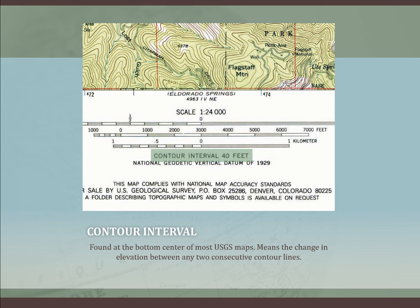That means the change in elevation between any two consecutive lines is 40 feet. If this one was 0, that would be 40, that would be 80, and that would be 120, and so forth. This one is 6,800, so this would be 6,840. This one over here would be 6,760, and so forth.